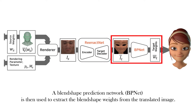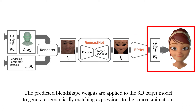A blend shape prediction network is then used to extract the blend shape weights from the translated image. The predicted blend shape weights are applied to the 3D target model to generate semantically matching expressions to the source animation.